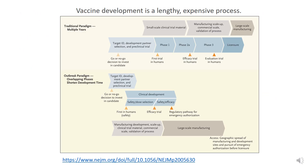To end this lecture, I'd like to point out that traditional vaccine development is a lengthy, expensive, multi-year process. You decide on a vaccine, it's extensively evaluated in animal models, then it goes into phase one clinical trials, then phase two and three clinical trials, then licensure, and then full-scale manufacturing.